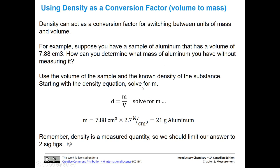Now, you can use density as a conversion factor for switching between units of mass and volume. Let's say you have a sample of aluminum with a volume of 7.88 cm³. How can you determine what mass of aluminum you have without measuring it? You can use the known density and the known volume.